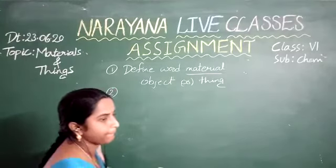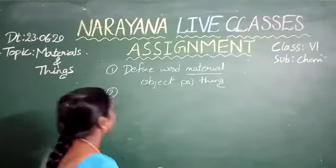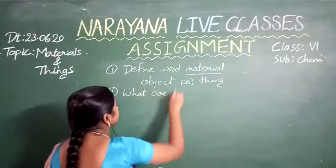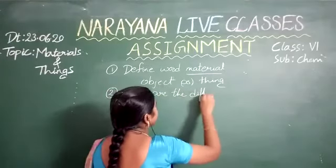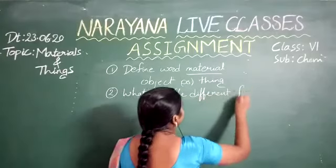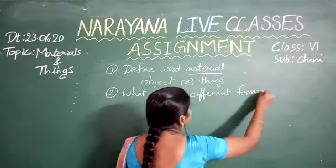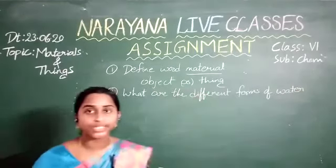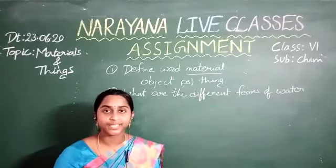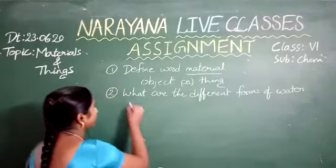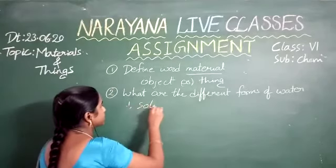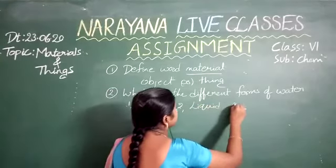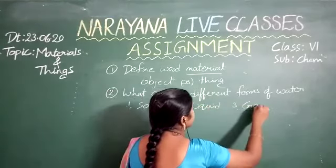Second question: what are the different forms of water? Water can naturally exist in 3 states. First one, solid state. Second, liquid state. Third one is gaseous state.